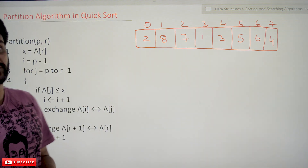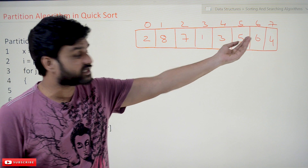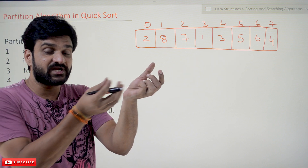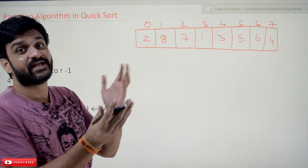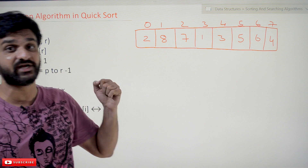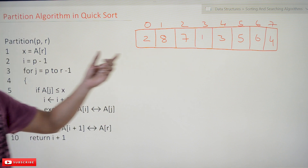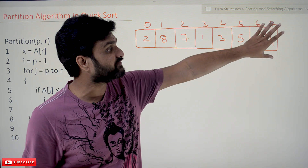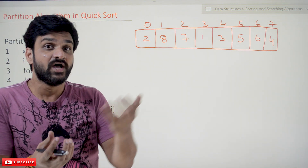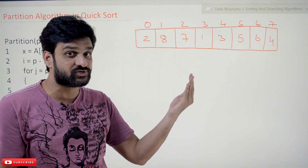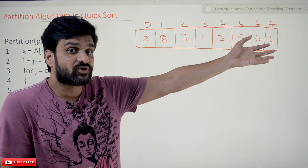Now coming to this class, we'll try to understand the partition algorithm in quicksort. In our previous video where we explained the quicksort working mechanism, we took a pivot element and based upon that pivot element we identified its position, and based upon that we divided the entire array into two pieces. In this video we will understand how the partition algorithm works. We will take one pivot element and try to find its position. All the elements on the left-hand side will be less than or equal to the pivot element, and all elements on the right-hand side are going to be greater than or equal to the pivot element.